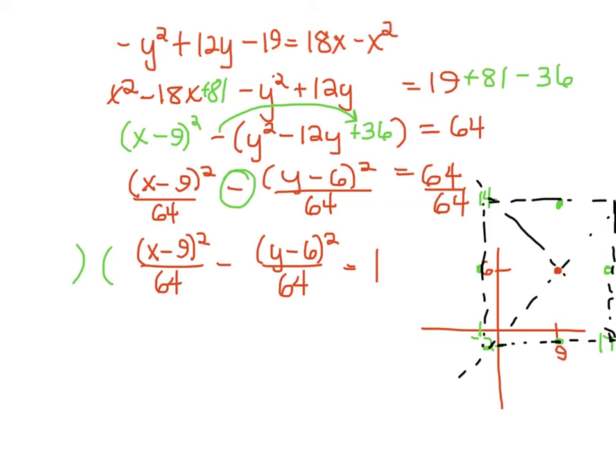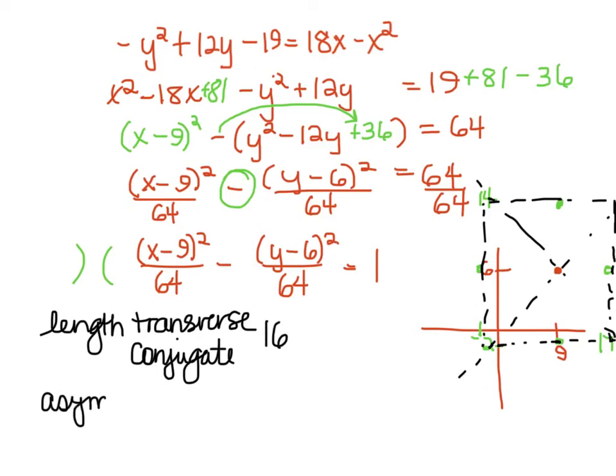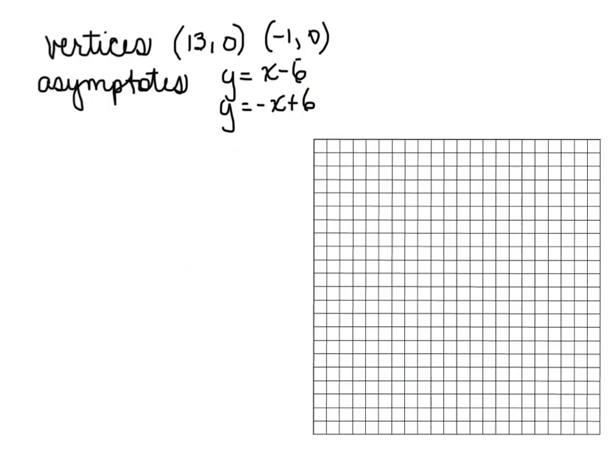So what I want to know is the length of the transverse, the length of the conjugate axis. They're both going to be 16. But now I want to know my asymptotes. And again I'm going to put them in point slope and use the center. y minus the y equals m times x minus the x. My slope is going to be rise 8 run 8, or rise 8 run backwards 8. So this is just going to be plus or minus. I could put the 1 in there but I don't need a 1 put in there for slope.